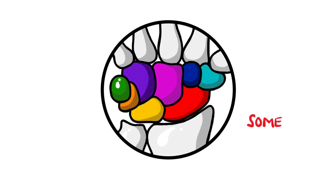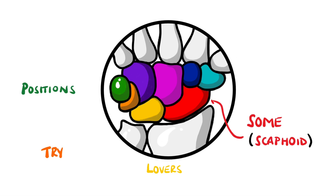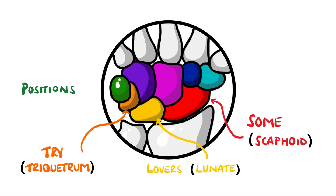The mnemonic starts as 'Some Lovers Try Positions.' S is for the scaphoid, L for lunate, T for triquetrum, and P for pisiform. To remember the position, you can use the letter P, because the pisiform is on the same side as the pinky.